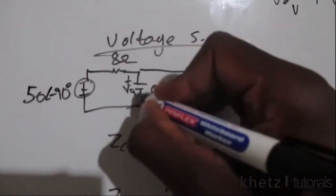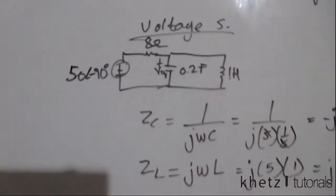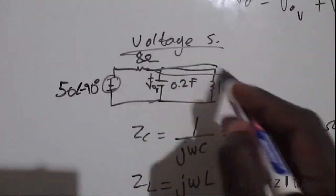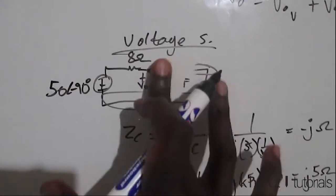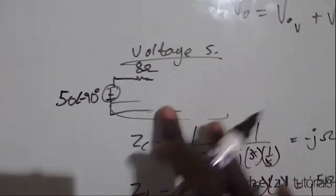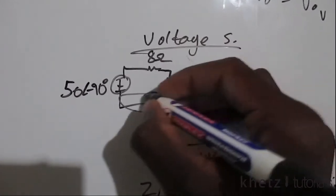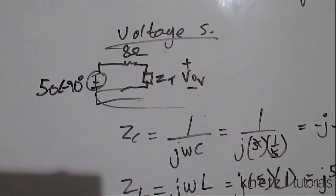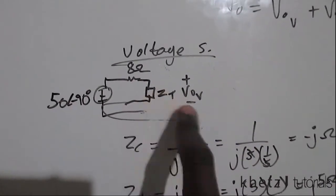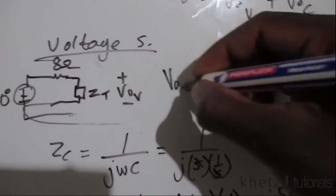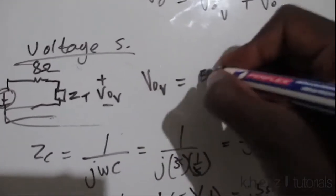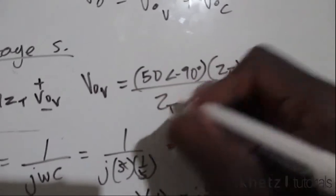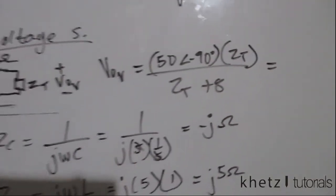Our aim is to find the contribution of the voltage source to VO. We can combine ZC and ZL in parallel, since they share two nodes, into a single impedance ZT. They still have VO — the voltage source contribution — across them. We then apply voltage division: the contribution of the voltage source to VO equals 50∠−90° multiplied by ZT, divided by ZT plus 8. But first, what is ZT?